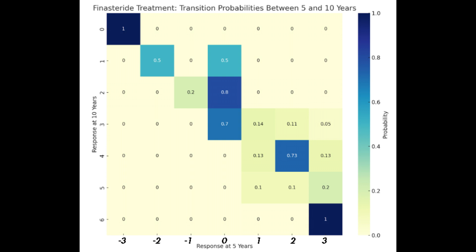The color intensity within each cell reflects the probability of a patient transitioning from their 5th year response to 10-year response, with darker colors denoting a higher probability.